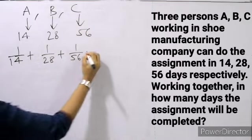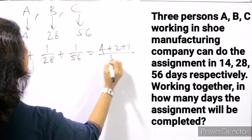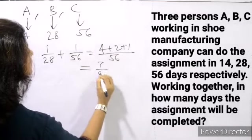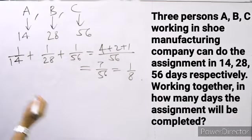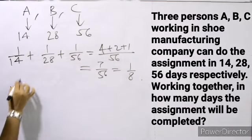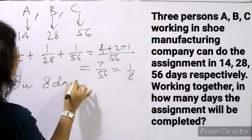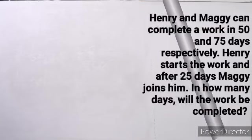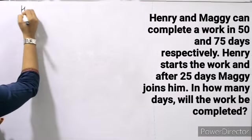Adding all three: 4 plus 2 plus 1 divided by 56 equals 7 upon 56, which is 1 by 8. So in 8 days they can finish the work.